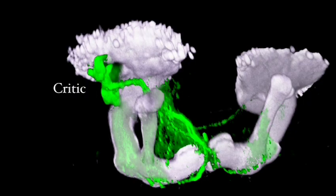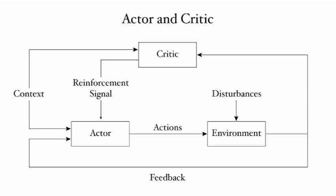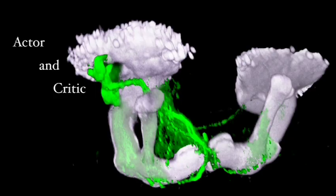Through many such experiments, we were able to narrow down the identity of the critic to just 12 cells. These 12 cells send their output to a brain structure called the mushroom body. We know from our formal model that the brain structure at the receiving end of the critic's commentary is the actor. So this anatomy suggests that the mushroom bodies have something to do with action choice — and based on everything we know about the mushroom bodies, this makes perfect sense.